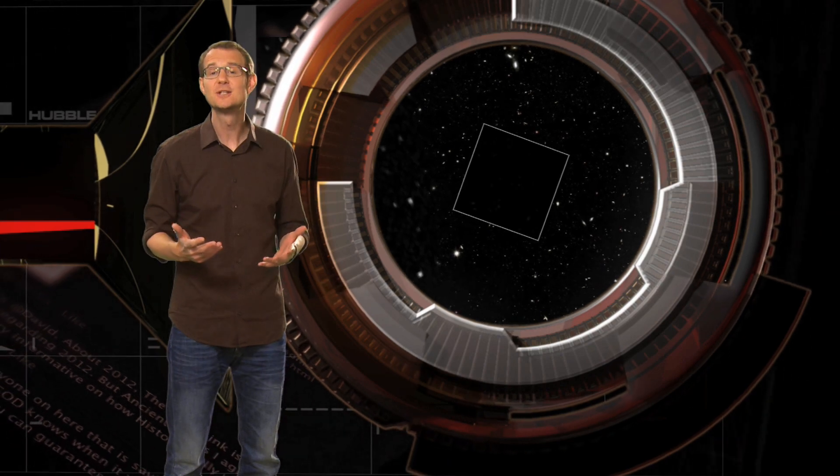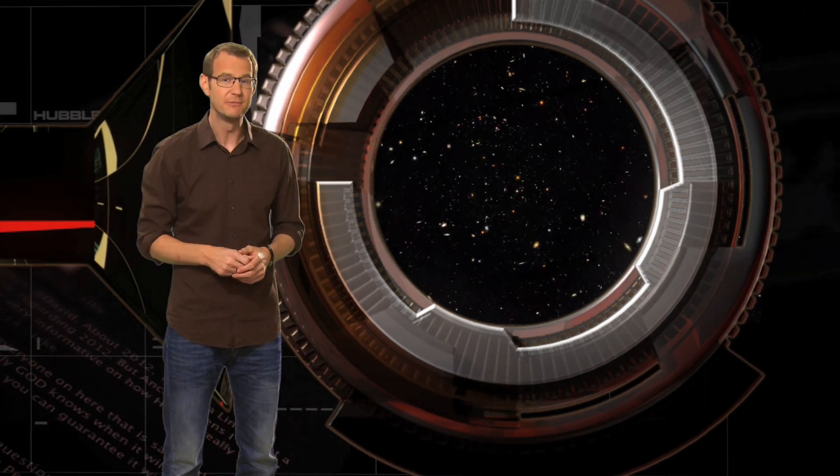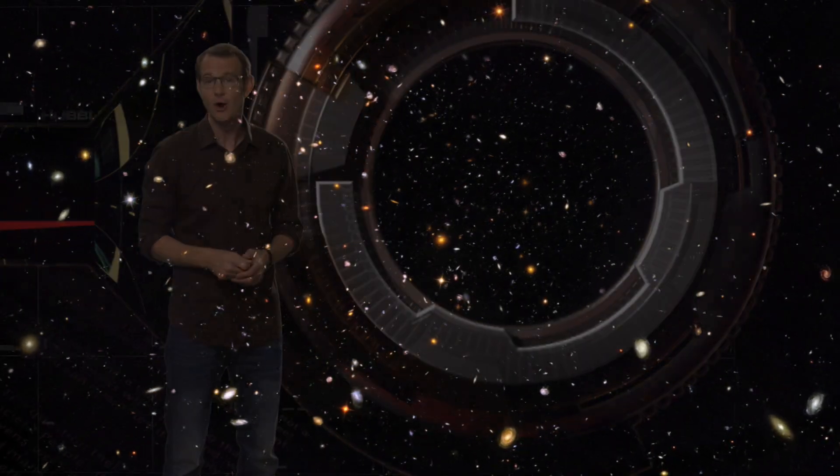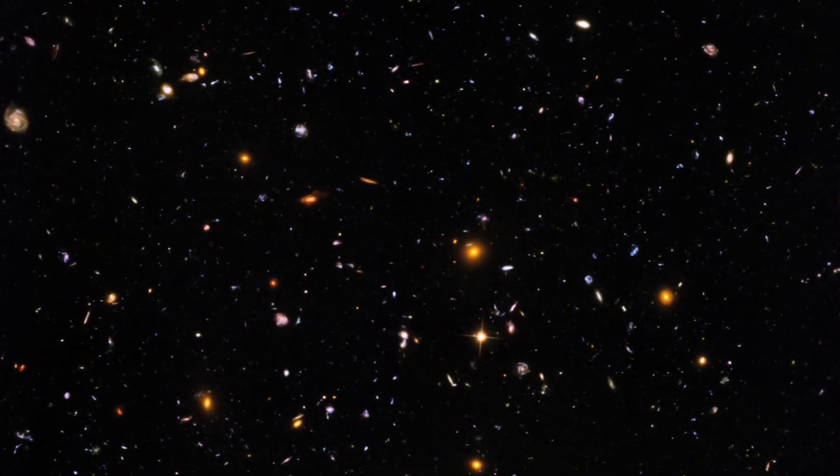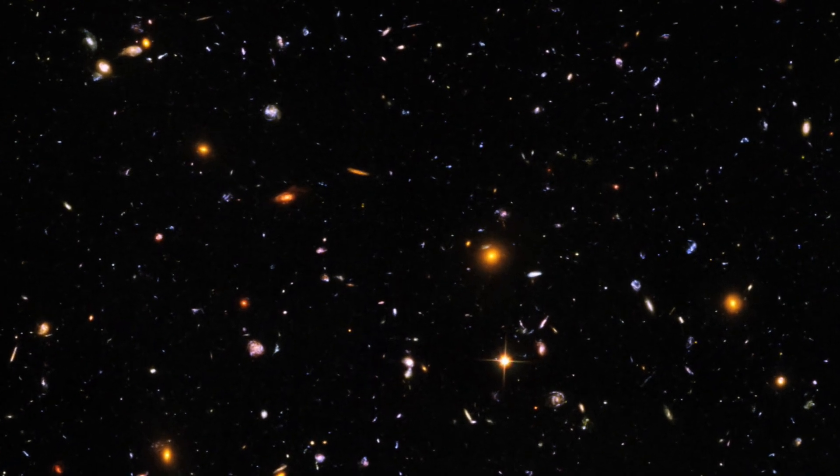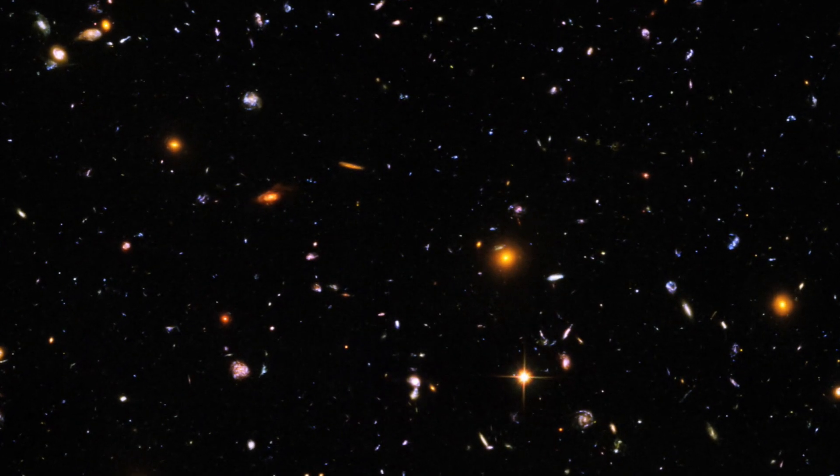The result is an image that we call the Hubble Ultra Deep Field. And it is, in fact, the deepest optical image of the universe that humanity has ever produced. Almost every object that you see in this image is, in fact, a very distant galaxy.